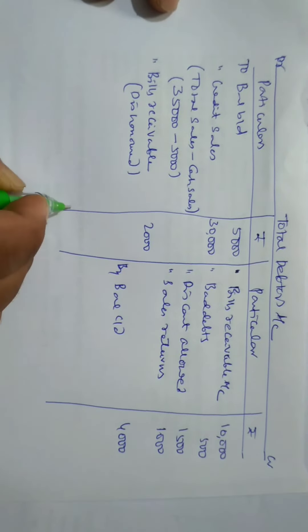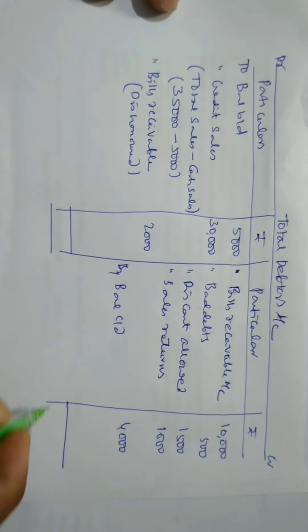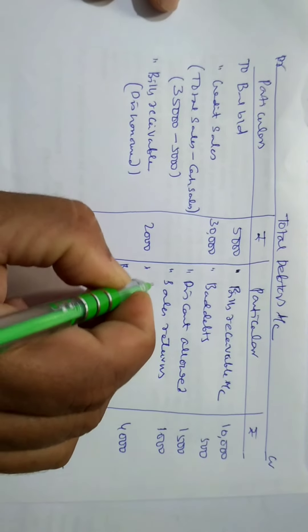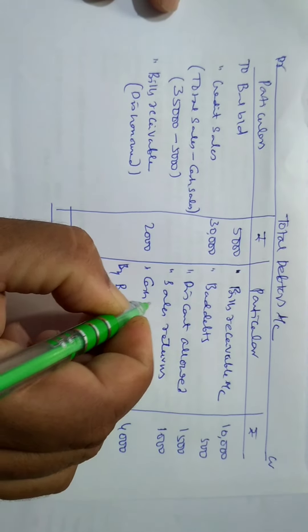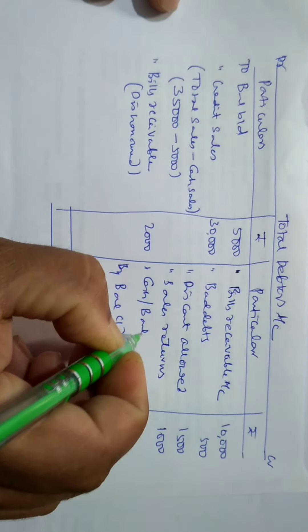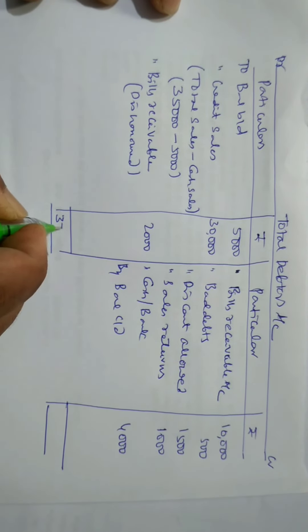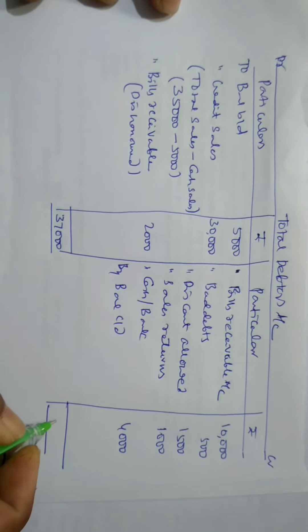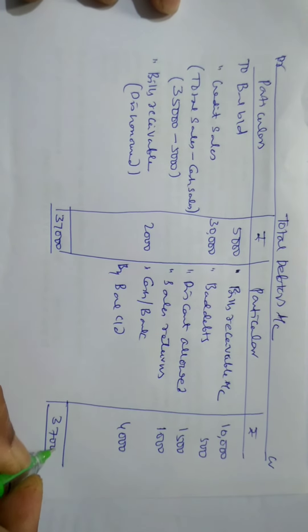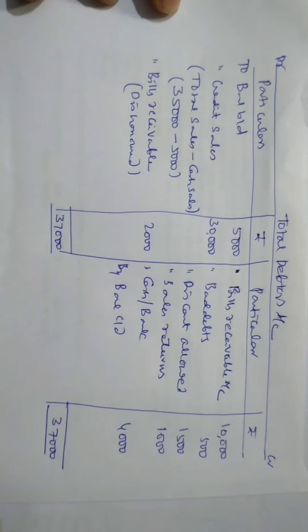And, no other amount is given, then the difference balance will be called as the cash or bank. So, this is the balancing figure. I'll take Rs. 37,000. Same, I'll take credit side Rs. 37,000.